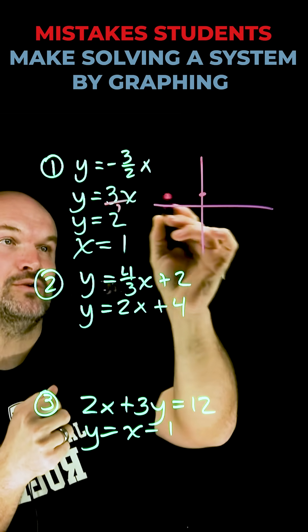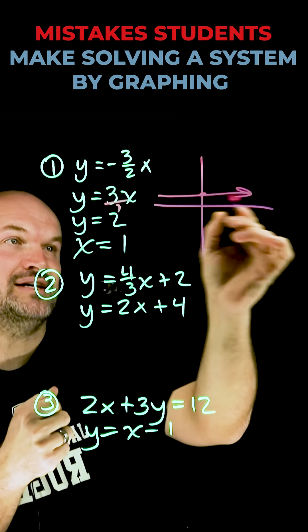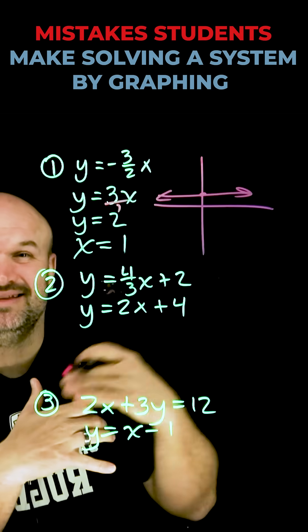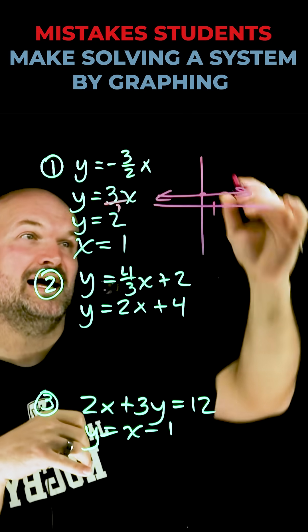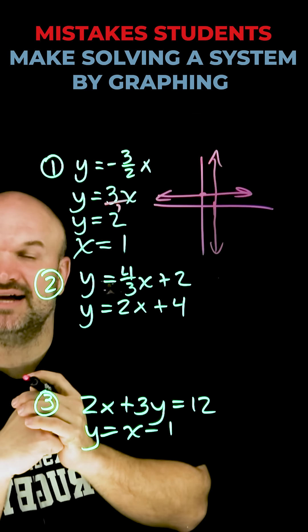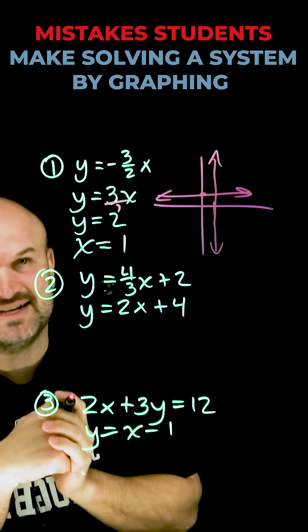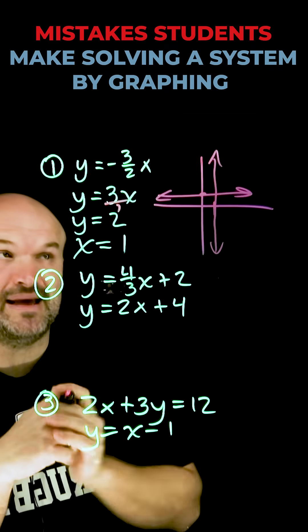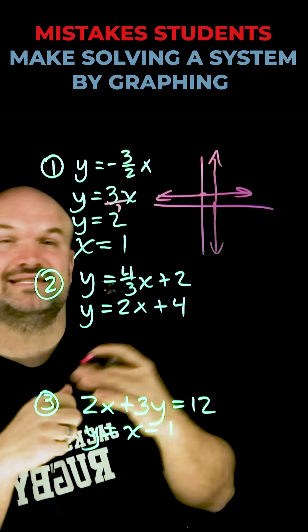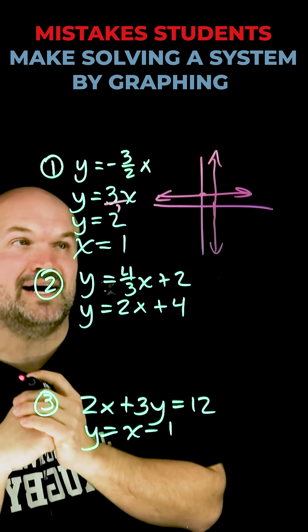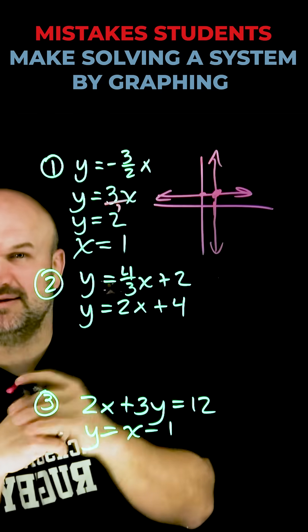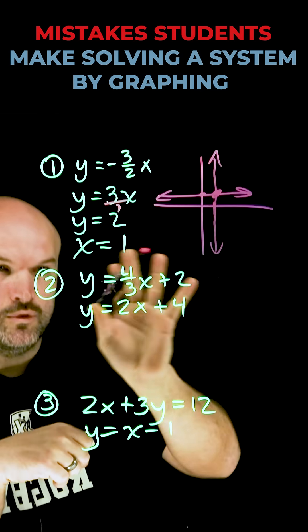When y equals 2, that represents your y-intercept, so that's always going to be a horizontal line. When x equals 1, that means for all y values, x is always going to be 1 — that is going to be a vertical line with an undefined slope. These are the common mistakes students make with graphing, because when we're solving a system of equations by graphing, we're looking for the intersection point. That is going to be the solution to our system.